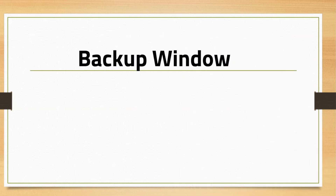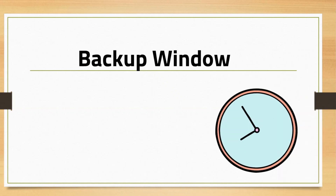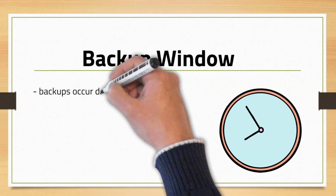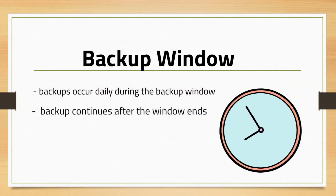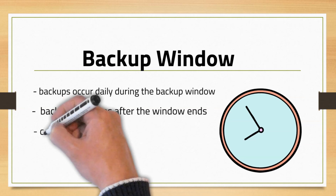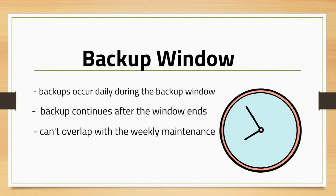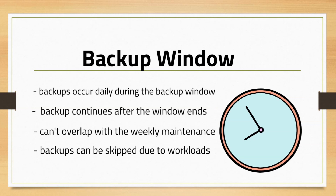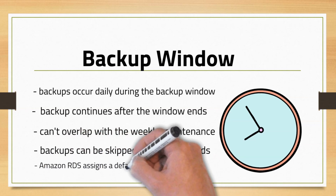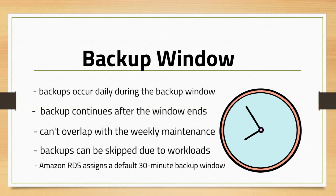Just like managing an on-premise database, you have a window where you schedule automated backups. Automated backups occur daily during a preferred backup window. If the backup requires more time than allocated, it continues after the backup window ends until it finishes. The backup window can't overlap with the weekly maintenance window for the database instance. Automated backups might occasionally be skipped if the database instance has heavy workload at the time the backup was supposed to start. If a backup is skipped, you can still do a point-in-time recovery, and the backup will be attempted during the next backup window. If you don't specify a preferred backup window, Amazon RDS assigns a default 30-minute backup window selected at random from an 8-hour block of time for each AWS region.